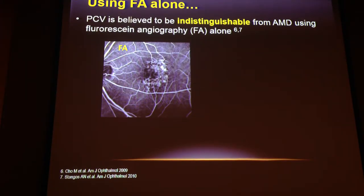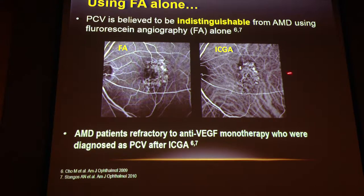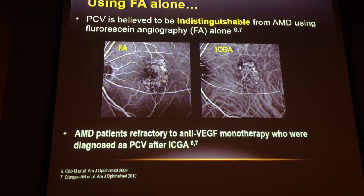What if we use just fluorescein angiography alone? You just see some hyperfluorescence, obviously some CNV on the fluorescein angiogram. Only when we do an ICG angiogram do we see the polyps as well as the branching vascular network. There are reports of patients diagnosed as AMD who were refractory to anti-VEGF monotherapy, subsequently diagnosed as PCV only when indocyanine green angiography was performed — in one case, treated with anti-VEGF for 18 months before an ICG angiogram revealed polyps. We tend to do more ICG angiograms in Asia because we know the prevalence is higher amongst our populations.